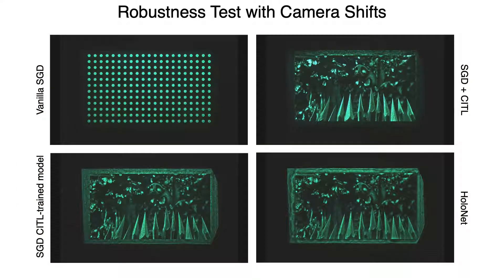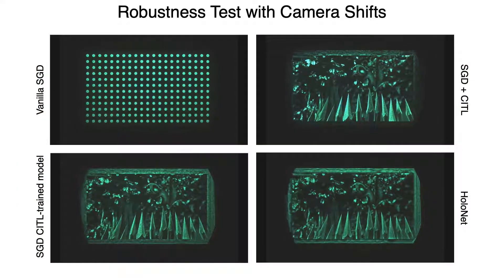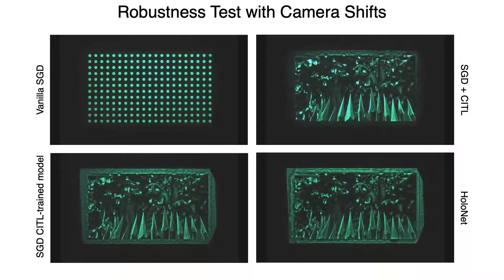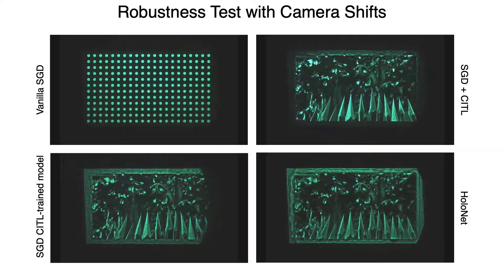To demonstrate that our camera-in-the-loop image synthesis is robust to viewpoint shift, we intentionally move the camera a few millimeters horizontally relative to the display. As seen here, the results still retain high quality.